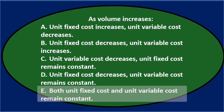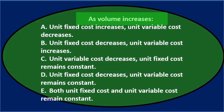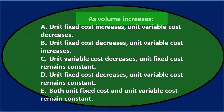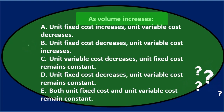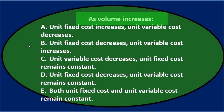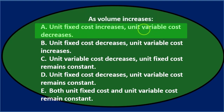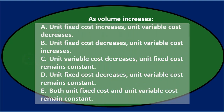Let's go through this using the process of elimination. As volume increases, we're talking about fixed costs and variable costs. Usually in this context it's related to overhead costs, but the same question applies to normal cost behavior. We're thinking about the two types of cost: variable and fixed. As volume increases, as we produce more, what happens with the behavior of these costs? Importantly, we're talking about unit costs all the way through — not total costs.